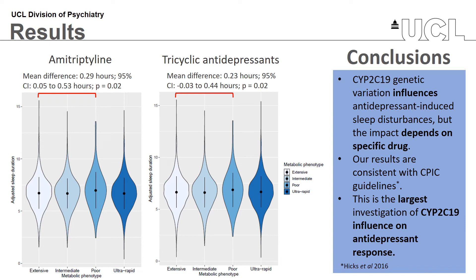Overall, we found that CYP2C19 genetic variation influences antidepressant-induced sleep disturbance, but the impact depends on the specific drug. Our results are consistent with several clinical guidelines which recommend dose alterations for poor metabolisers taking tricyclic antidepressants. This is one of the largest investigations of CYP2C19 influence on antidepressant response conducted thus far, and we plan to continue investigating other common adverse drug reactions using the same data.